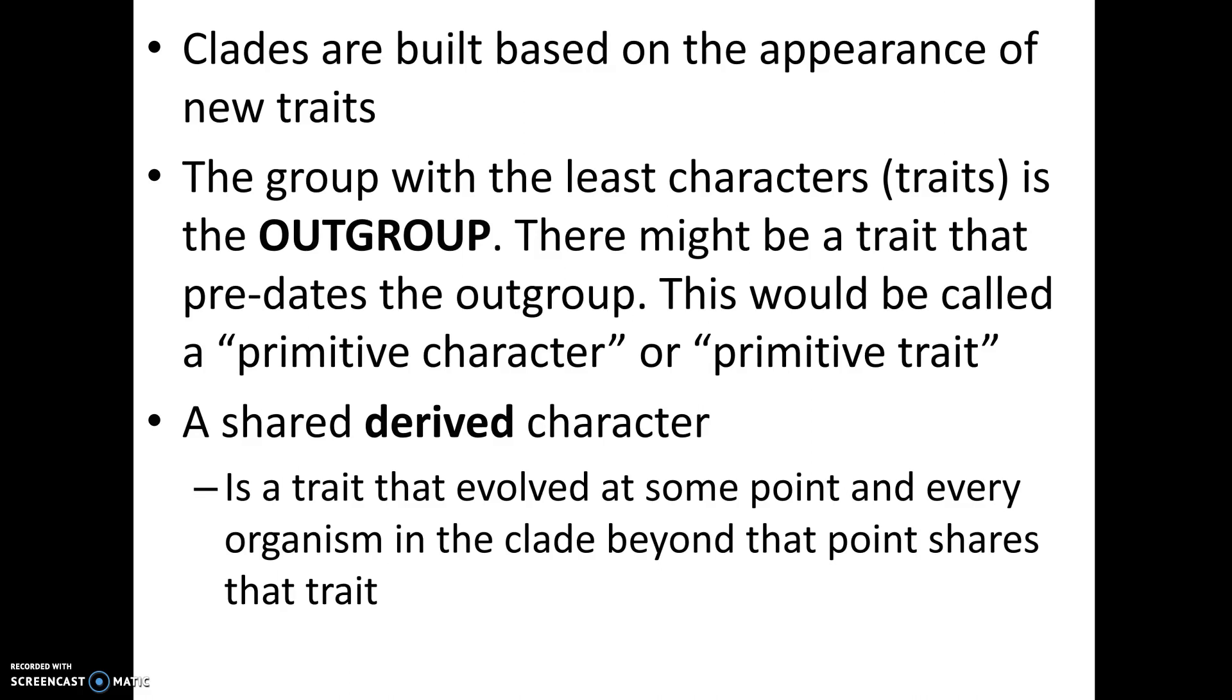First of all, the most primitive organism in a cladogram, the organism that has the least number of traits, maybe they have none of the traits, they're called the outgroup. You should know that. You could always be asked who's the outgroup in a cladogram on the AP exam. I've seen this multiple times.